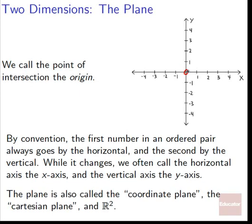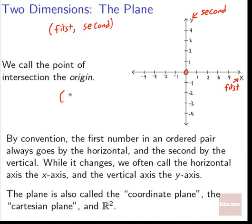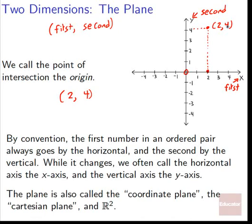By convention, the first number in an ordered pair always goes to the horizontal. The horizontal location is always based around the first value, and the vertical location is always based around the second value. So if I had (2, 4), the first value goes to 2 on the horizontal and then we rise up to 4 on the vertical. This convention is important to remember: first thing always goes to horizontal, second thing always goes to vertical.